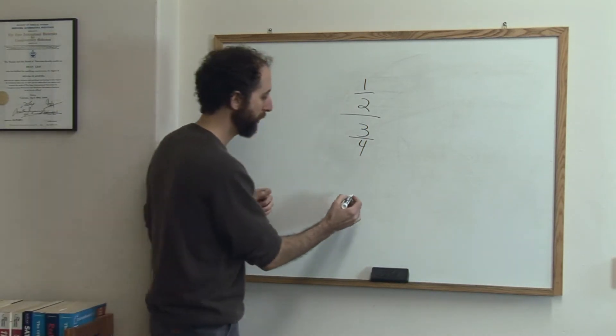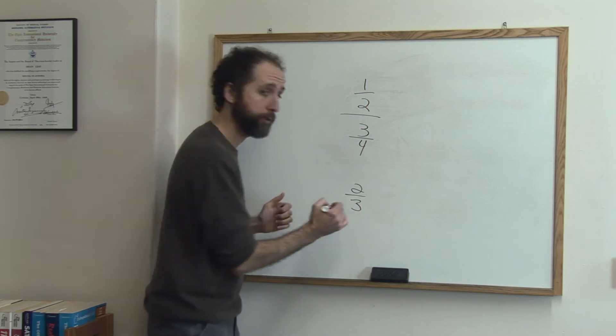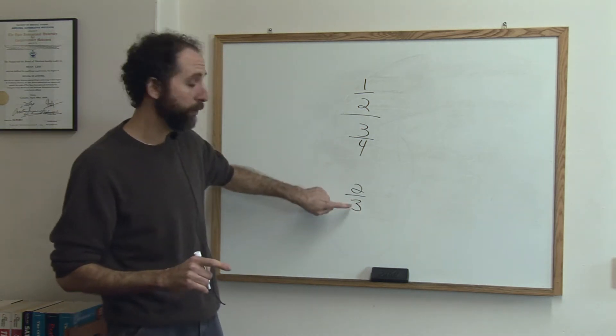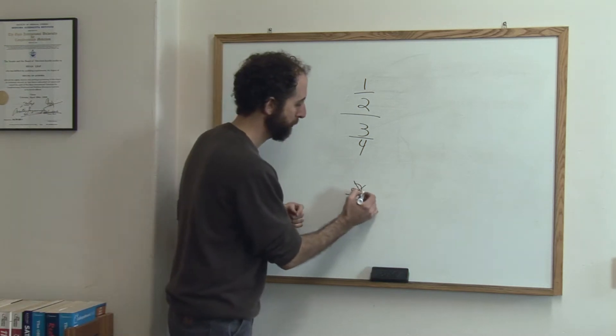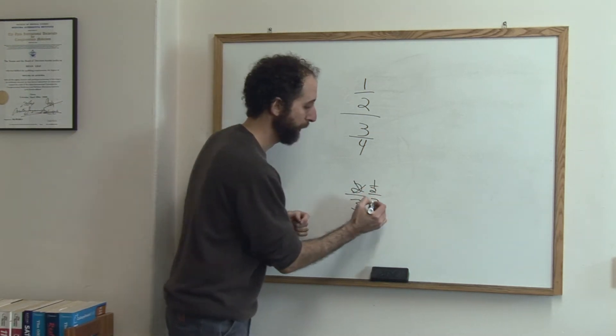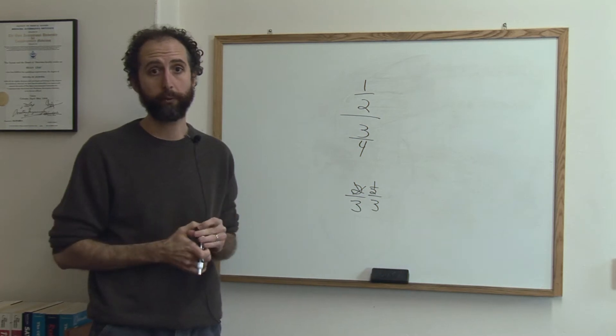A normal fraction would look like this, 2 thirds. But if you take out the 2 or the 3 and you put a fraction in that part, so take out this 2 and make it 1 half over 3, that's called a complex fraction, it's just a technical term.